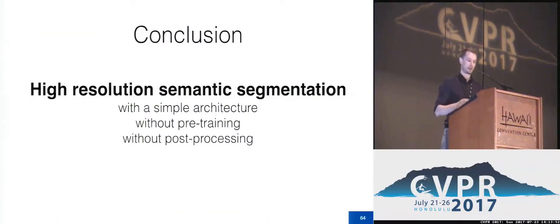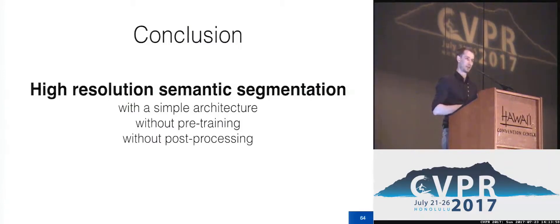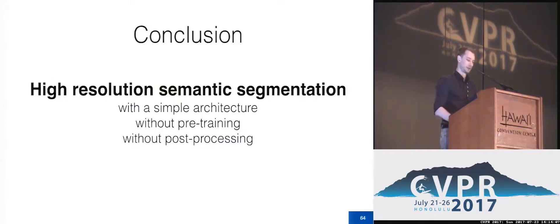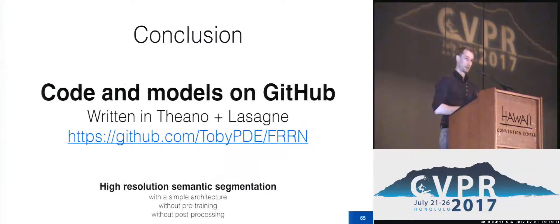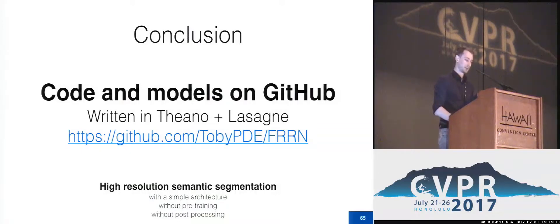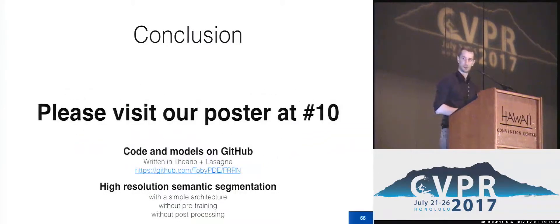In conclusion, this work is about high-resolution semantic segmentation with a very simple architecture. We are able to train from scratch to state-of-the-art performance, meaning we are very data efficient. The entire segmentation is processed on the GPU with no need for any pre- or post-processing. Code is available on GitHub, including pre-trained models for FRN-A and FRN-B, as well as code for inference and training. If you have questions or want to chat, come visit us at poster number 10. Thanks.